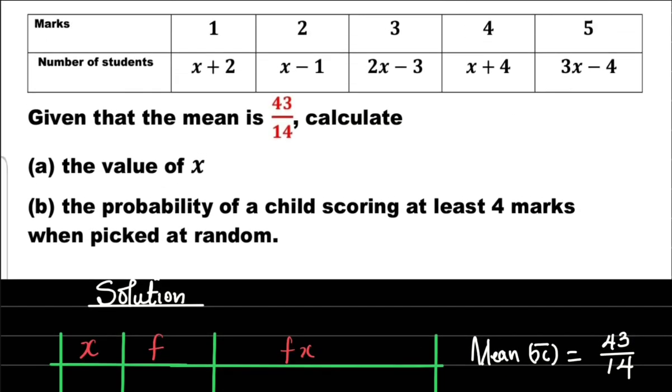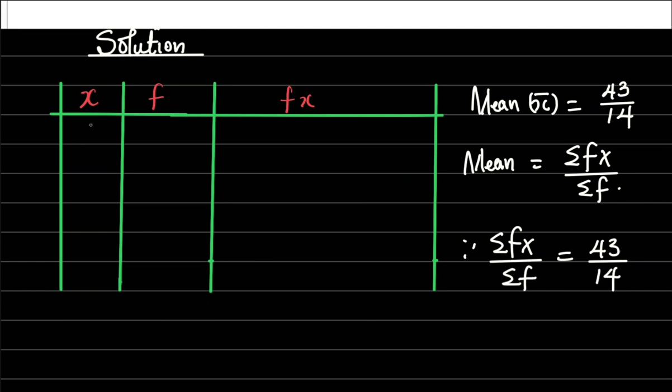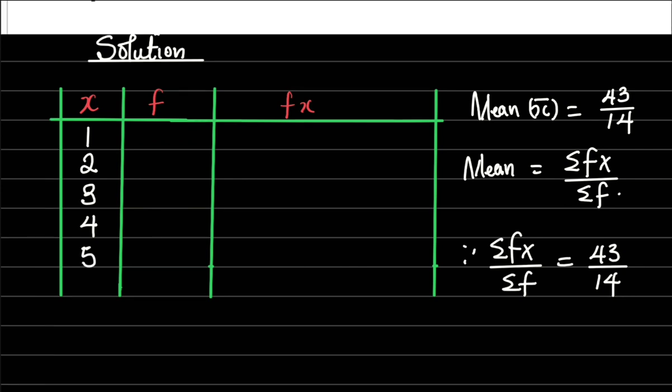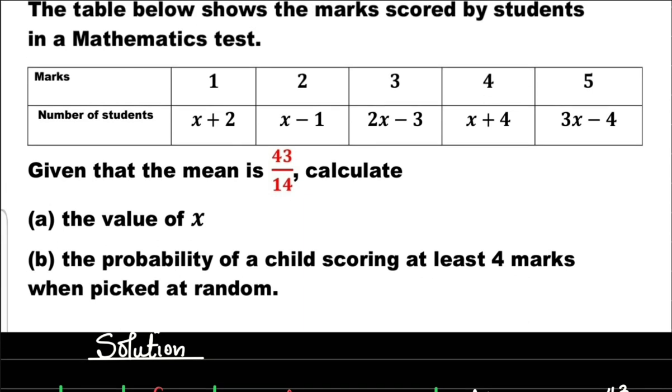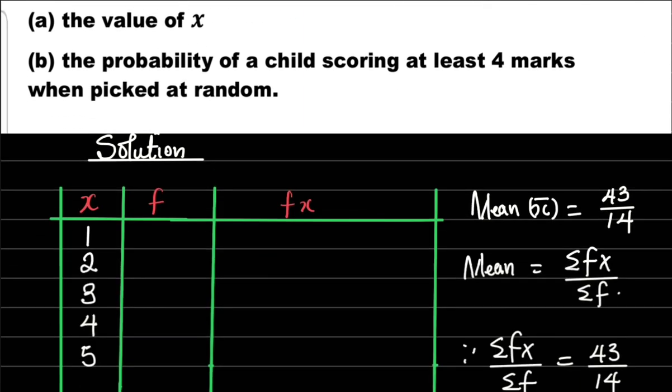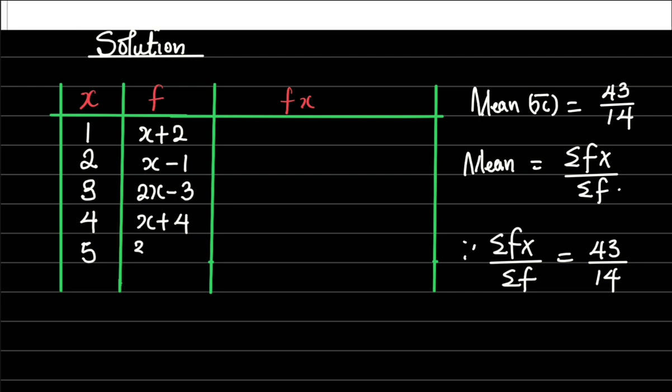Now remember this is ungrouped data, so our x here stands for the marks or the scores which we have 1, 2, 3, 4, 5 representing the scores. Now for the frequencies, which is number of students, we have x plus 2, we have x minus 1, 2x minus 3, x plus 4, and 3x minus 4.